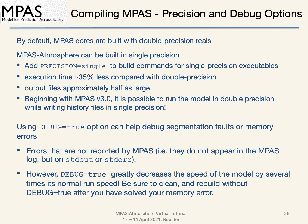By default, MPAS is built with double precision reals. If you desire, you can build both MPAS cores in single precision with the precision=single option in your make command. Doing so will speed up the model by approximately 35% and decrease the size of output files by half. If you want to run the model in double precision but only want single precision output files, see the user's guide. The debug option is very useful when debugging segmentation faults and memory errors — it will generate a line number where the error occurs. However, running in debug mode significantly slows the model, so after addressing the memory problem, be sure to clean and compile without debug=true.